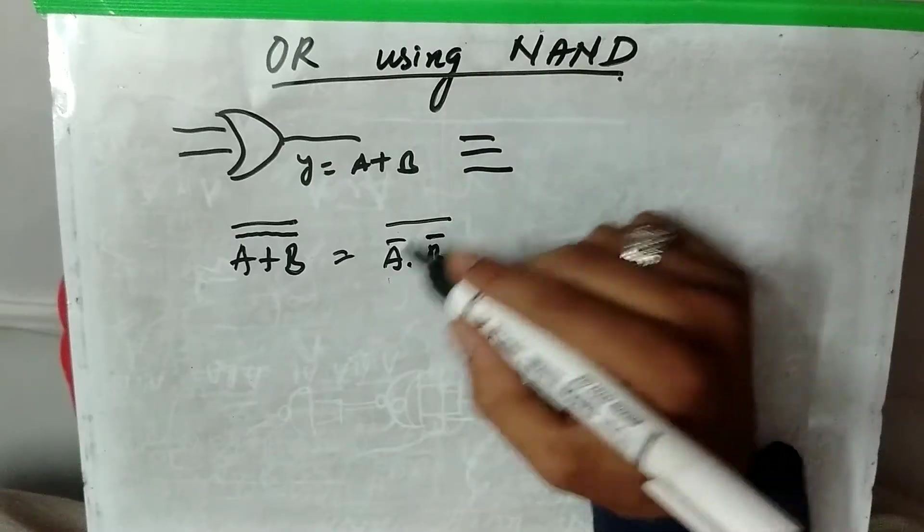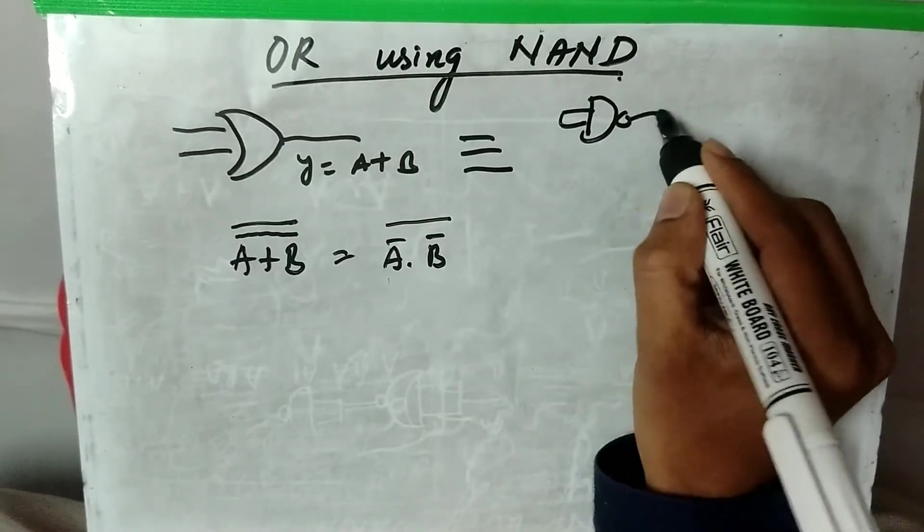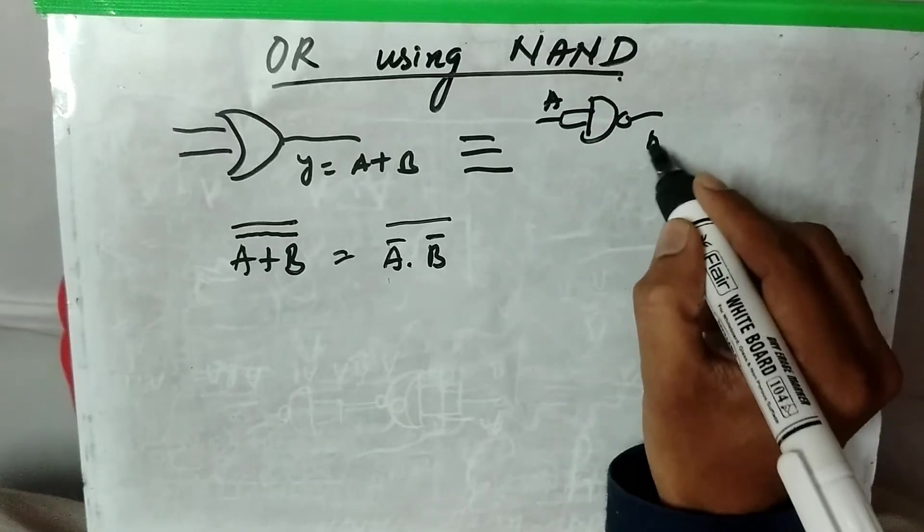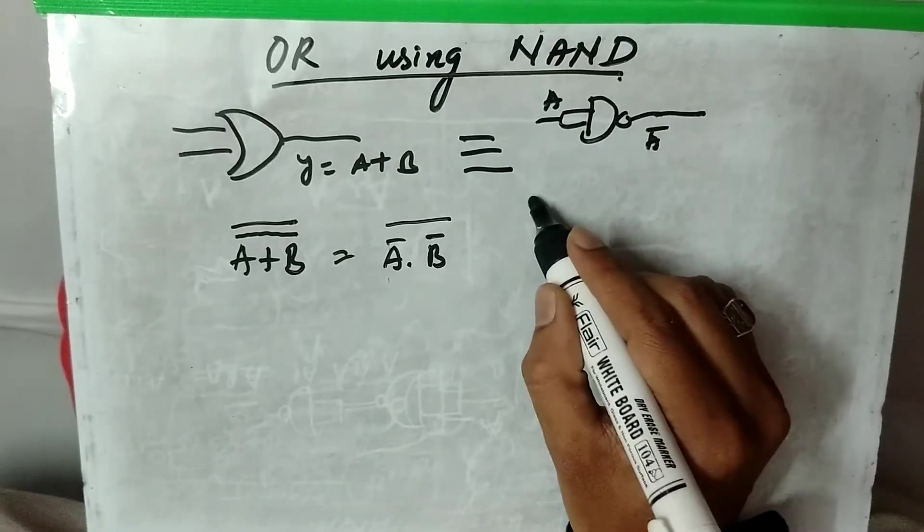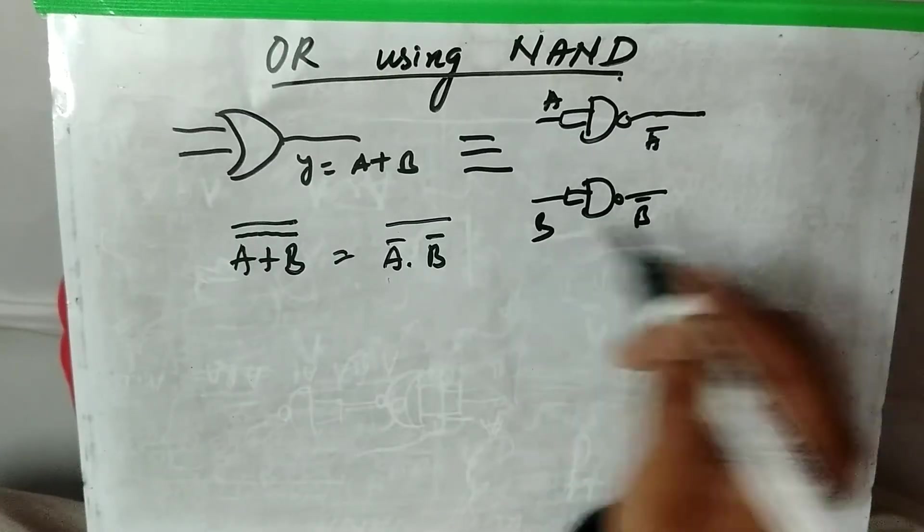Applying that, you will get A bar. So A bar, this is the equivalent of NAND gate. This is A, you will get A bar here. Then this is B, you will get B bar here.